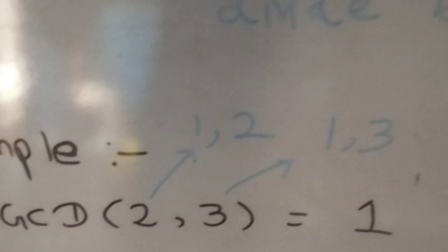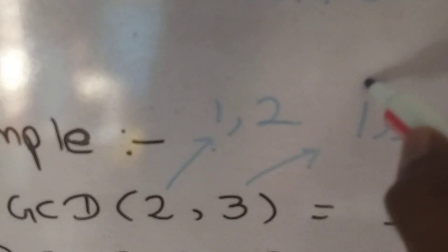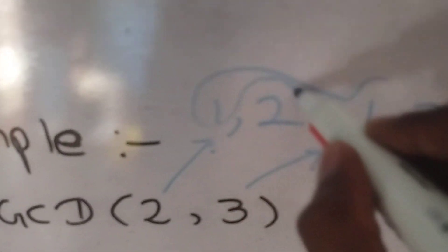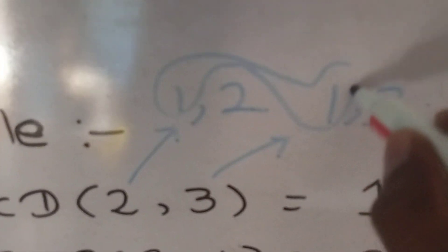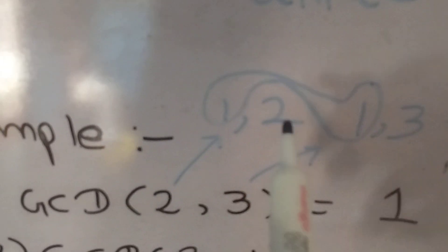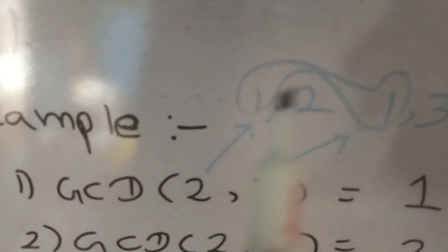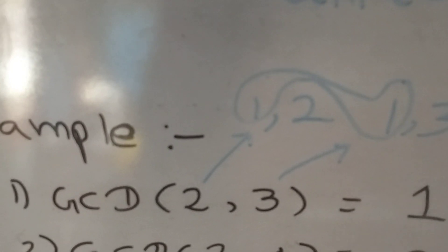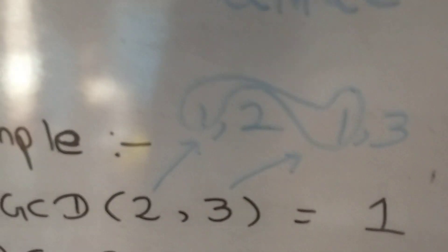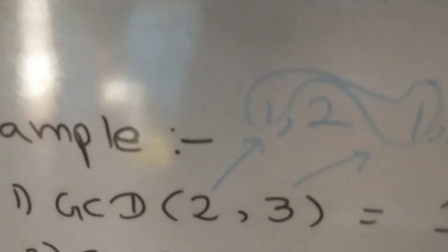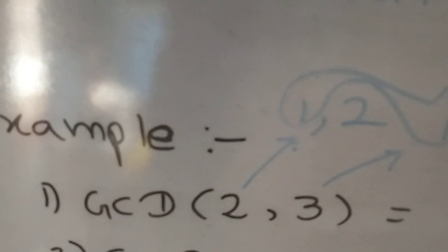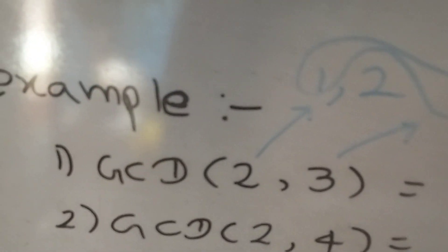We need to find a common integer. 2 is not present in the divisors of 3, and 3 is not present in the divisors of 2, so the only common answer is 1. The maximum integer which can divide both x and y without any remainder is 1. I hope you understand — if not, don't worry, we'll look at more examples.